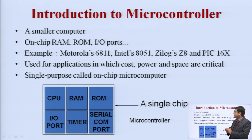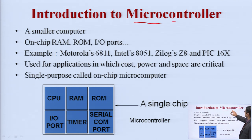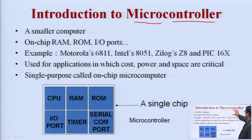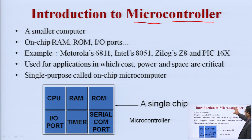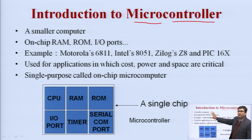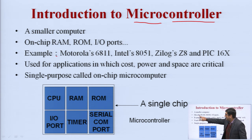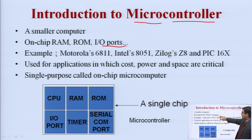Let us start with the introduction to microcontroller. Microcontroller has two words: micro and controller. Micro represents something very small in size, and controller means it is used to automate the process — that is, it controls the timing and execution of instructions. As a combination, a microcontroller represents a computer which is used to control things. It is basically a self-contained computer on a chip — a smaller computer in which all components are integrated on the same chip, including on-chip RAM, on-chip ROM, input-output ports, timers, and serial communication port.